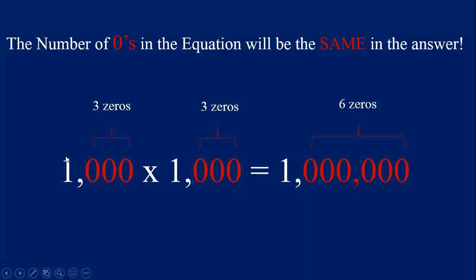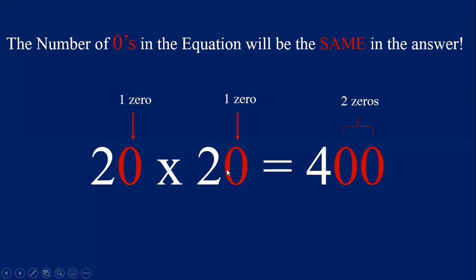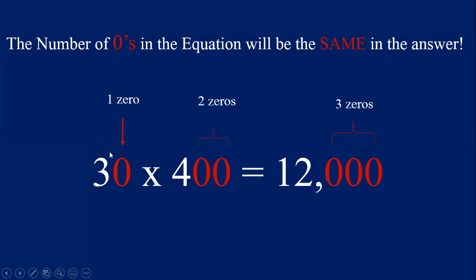Those equations were straightforward because all we really had to multiply were ones. Let's try equations with different numbers. This equation is 20 times 20. The strategy is the same — start left to right and multiply the numbers that are not zero: 2 times 2 equals 4, so we write our 4 first. Count the zeros: one zero in the first 20 and one in the second 20, so two zeros in the answer. 20 times 20 equals 400.